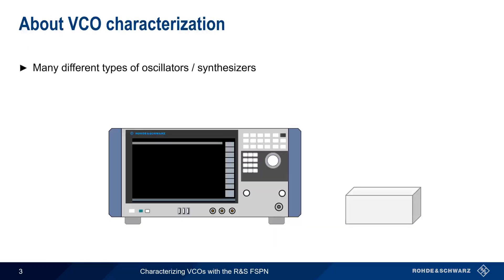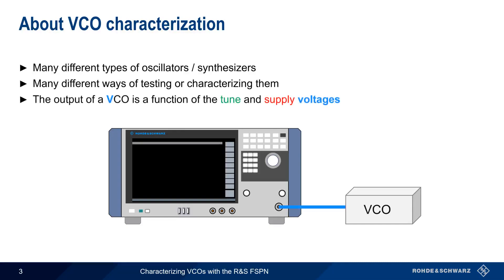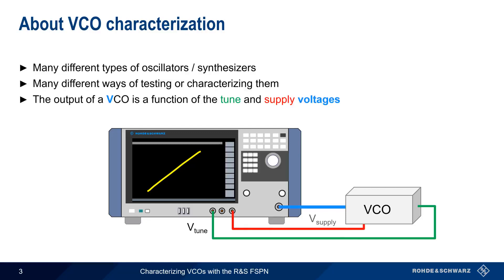There are many different types of oscillators or synthesizers — devices designed to produce a waveform at a given frequency — and many different ways of testing or characterizing these sources. As the name implies, the output of a VCO, or voltage-controlled oscillator, is almost entirely a function of two voltages. The control or tuned voltage sets the VCO frequency, and supply voltage can also affect some VCO characteristics. In this presentation, we'll be concentrating on the effects of these two voltages.